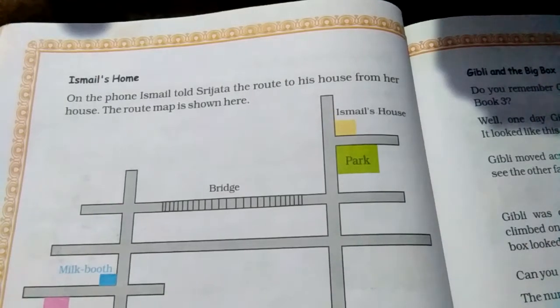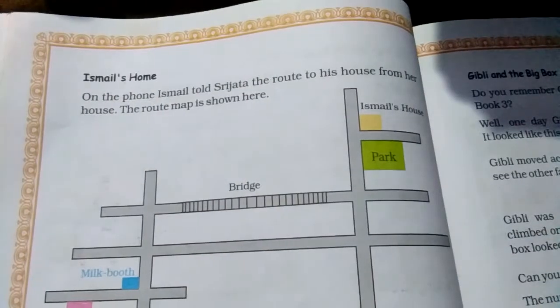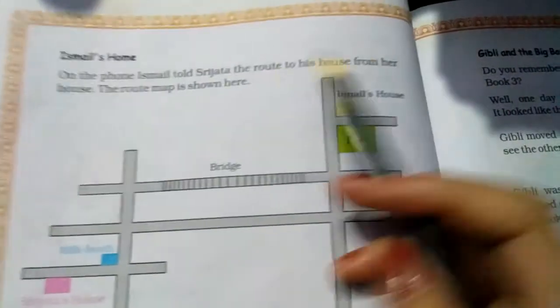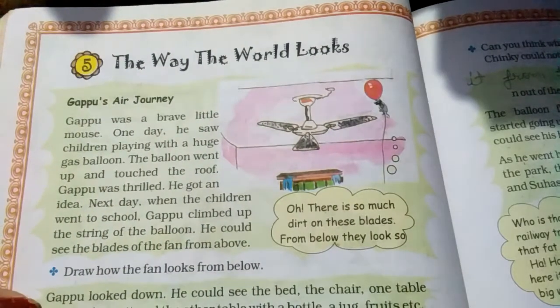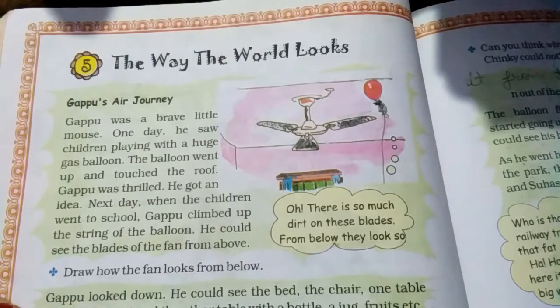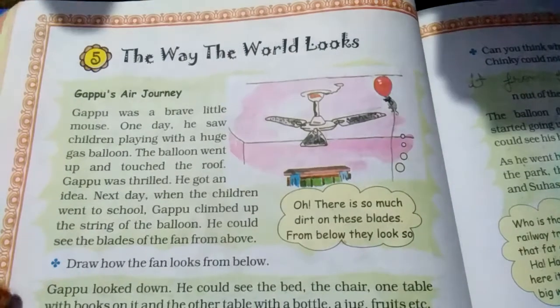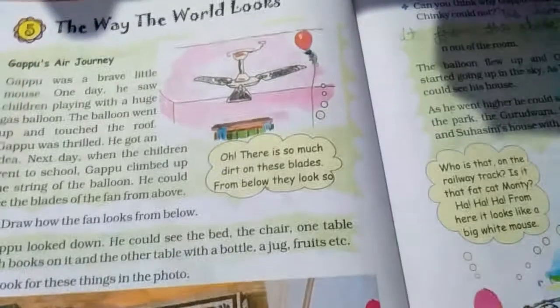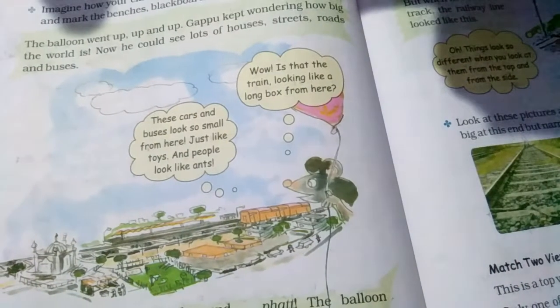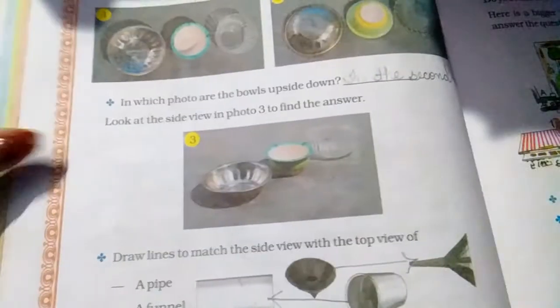Hello students of class 4th. Today we are going to start our new topic of the same chapter. Our chapter name is 'The Way the World Looks.' In this chapter, we have studied that things look different from different angles — from the top, from the front, from the side.